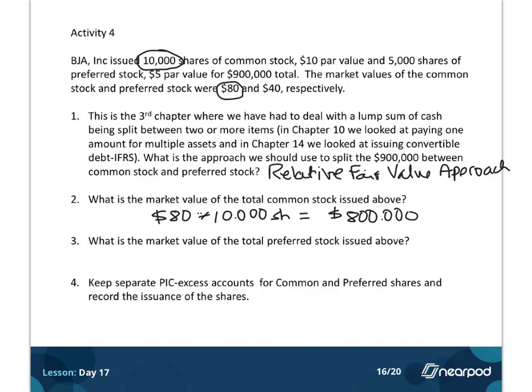That's the fair value of the common shares, okay, or the market value. And then question three says, what's the market value of the total preferred stock? Okay, so it's not just asking for a per share basis, we're asking for the total, which is critical in both of these, okay? So we have 5,000 shares of preferred at $40, so we do the exact same thing. 40 times 5,000 shares is going to give me 200,000. That's the market value.